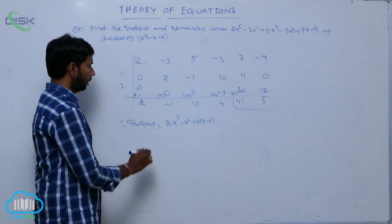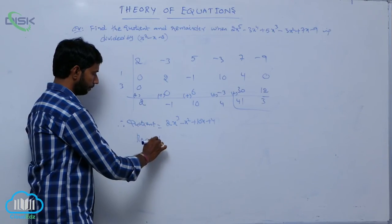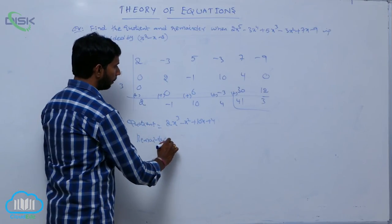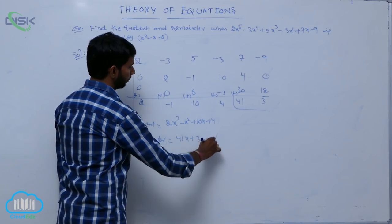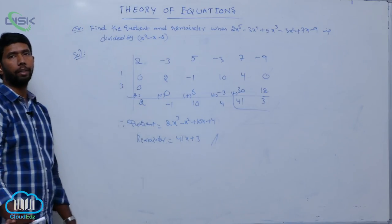And the remainder is equal to 41x plus 3.